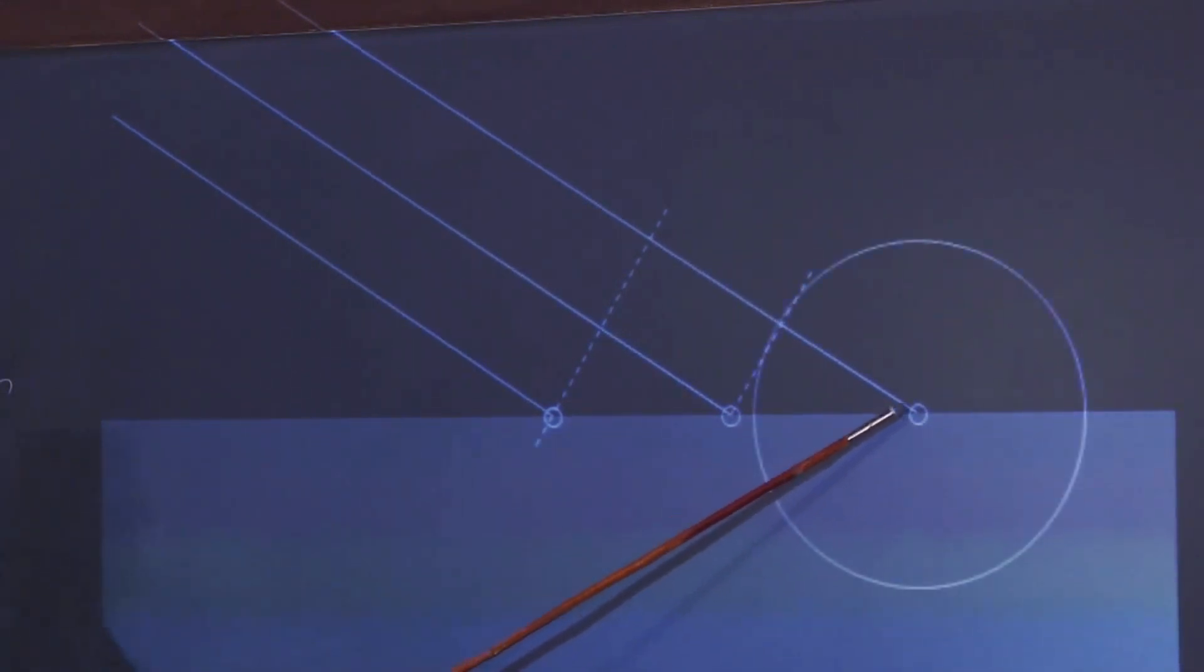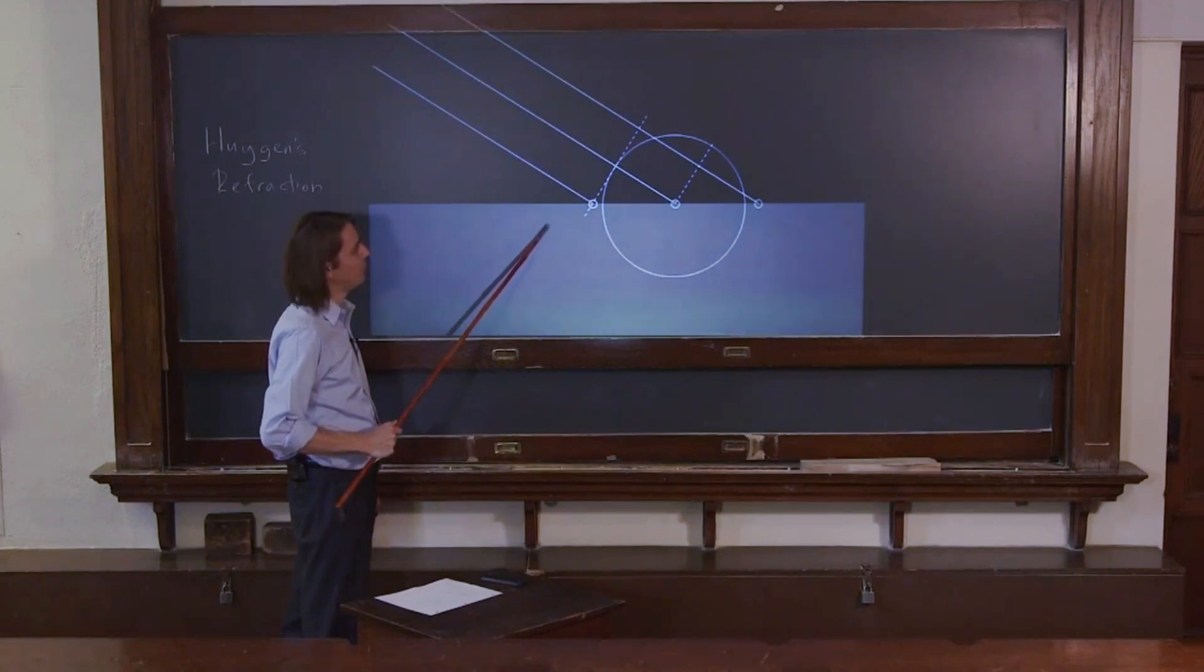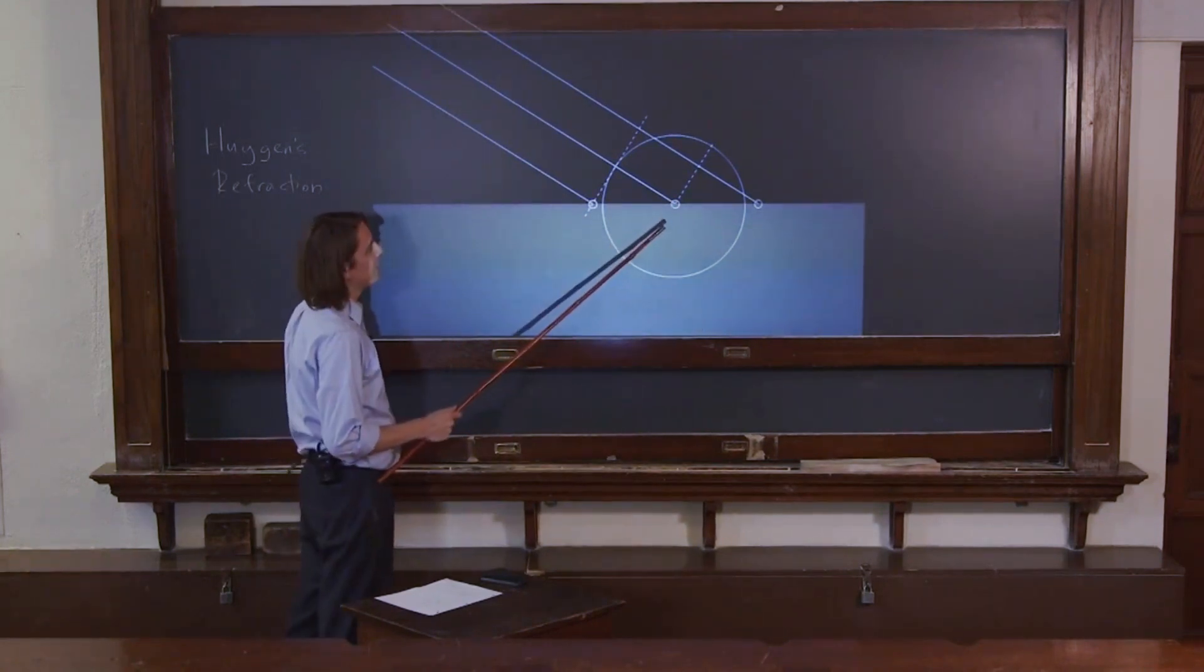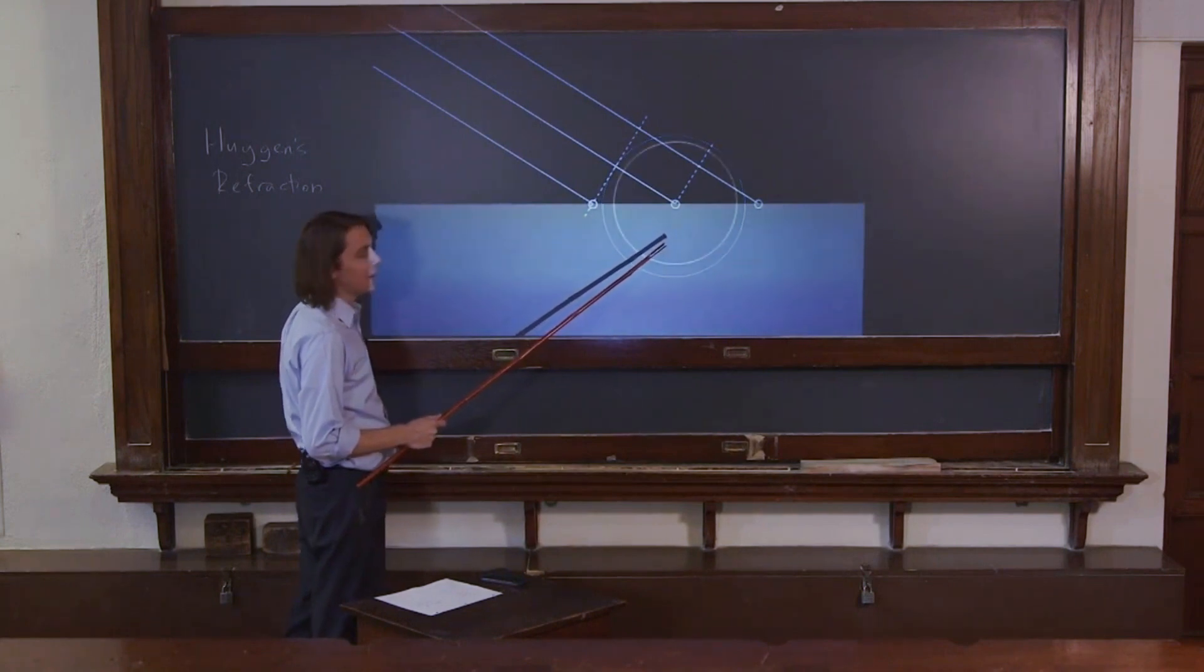So again, this one, we draw over here and say, no, that's this one. But now something different is happening. It's propagating into the higher index medium. This is index n. Say this is index n equals 1. This is, say, glass 1.5. We know that means that it slows down, so that means we have to make the circle smaller like that.